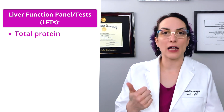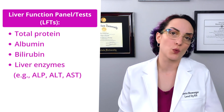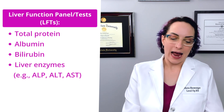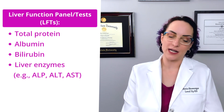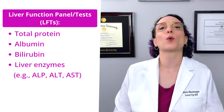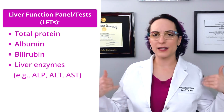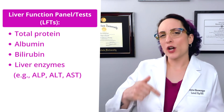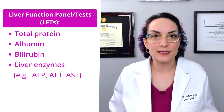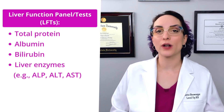The liver function panel will tell me things about protein — how much total protein, how much albumin. I need to know about the byproducts, things like bilirubin. I also need to know about the liver enzymes: alkaline phosphatase (ALP), alanine aminotransferase (ALT), and aspartate aminotransferase (AST). These three liver enzymes are going to be part of your liver function test, where we look to see what's going on with the liver — whether there's an acute or chronic injury, how much protein and albumin are present, and how well albumin is helping to bring fluid in or out of the vascular space.